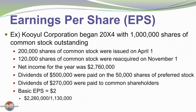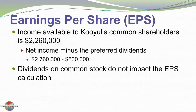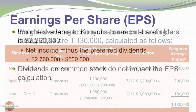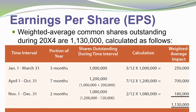We need to dig deeper to see how we get that. Considering net income minus the preferred dividends: the company's net income was $2,760,000 total, but there was $500,000 in dividends for the preferred shares. We're not going to subtract the common share dividends, only the preferred share dividends. So income available to Cooliole's common shareholders is deemed to be $2,260,000. The weighted average number of shares was determined to be 1,130,000 by the following process.